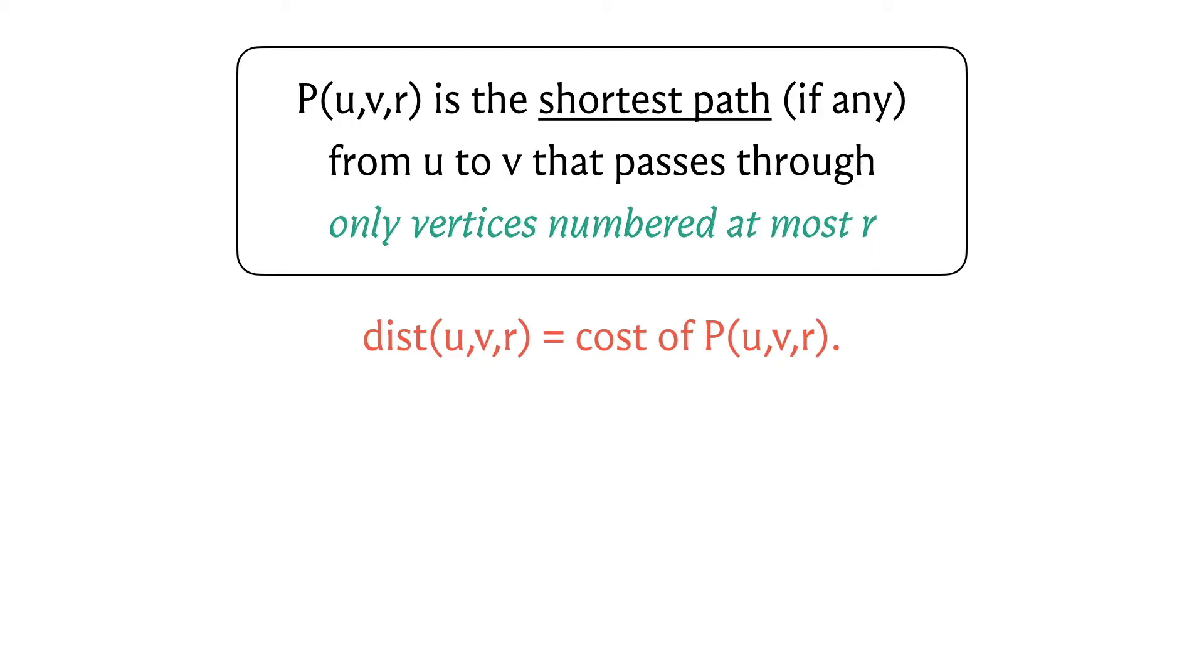Okay, let's think about how do we compute these values. Well, one easy case is when r is equal to 0. If vertices are labeled from 1 to n, then basically we are saying compute the length of the shortest path from u to v which passes only through vertices numbered at most 0. Now there are no vertices numbered at most 0. So this is just a twisted way of saying that you're not allowed to use any intermediate vertices. Notice that the only paths that don't use intermediate vertices are the direct edges. So the distance of (u,v,0) is going to be the weight of the edge from u to v if such an edge is available, and if such an edge is not available then this distance just remains infinity.